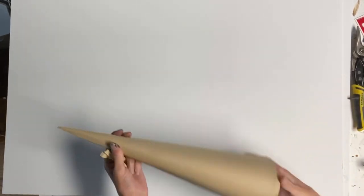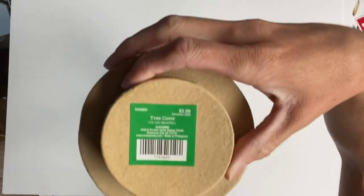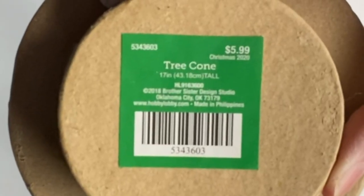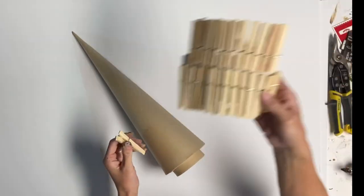Today I'm going to be starting with this tree cone. It's a cardboard tree cone and I got it from Hobby Lobby. It's 17 inches tall and it was $5.99, but all of the Christmas stuff is 50% off.